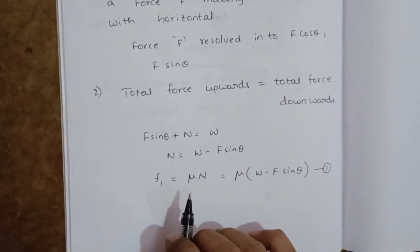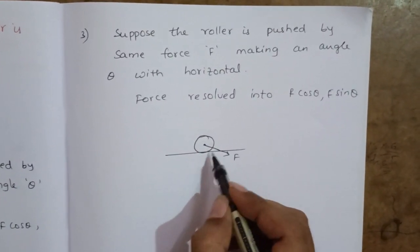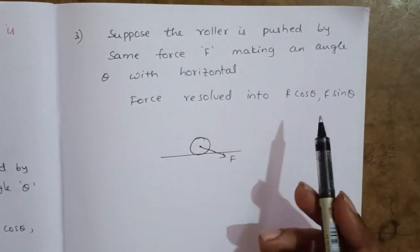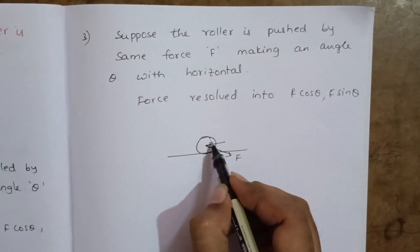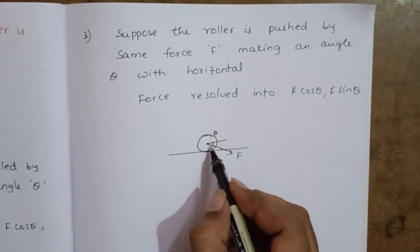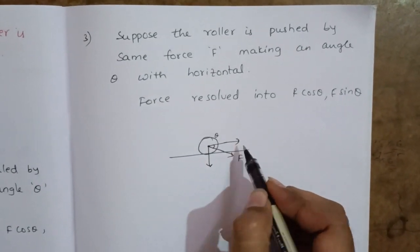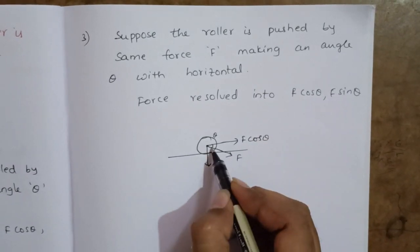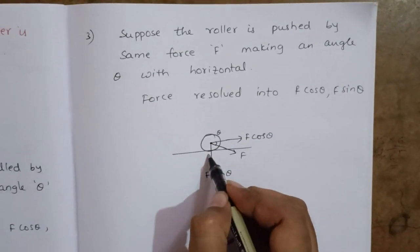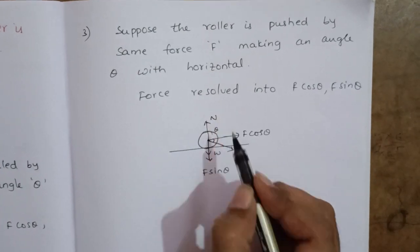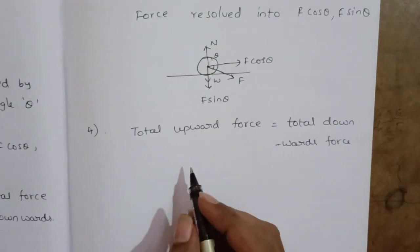Now we consider the case where the roller is pushed. The same land roller is pushed by the same force F, making an angle theta with the horizontal. Again it is resolved into two components: F cos theta and F sin theta. The weight of the body acts downward and normal reaction acts upward.